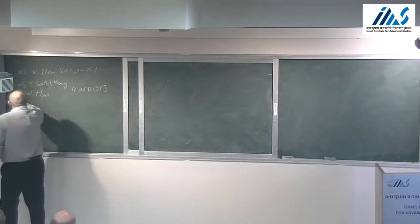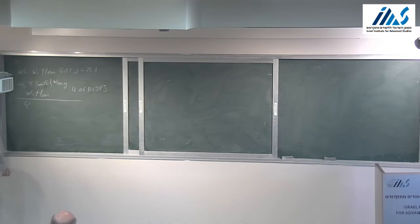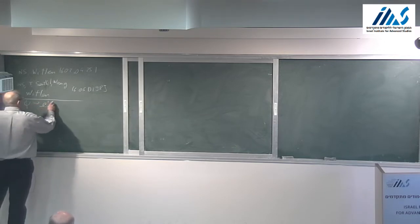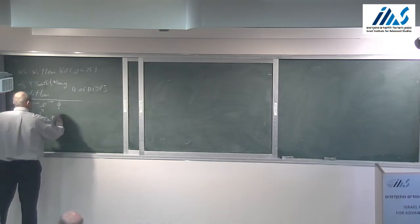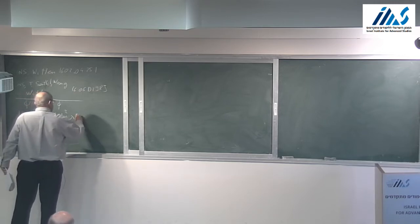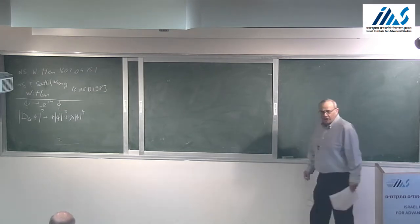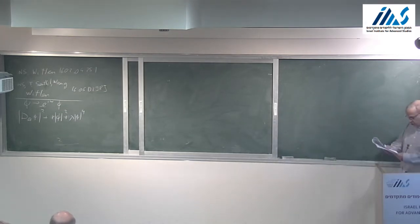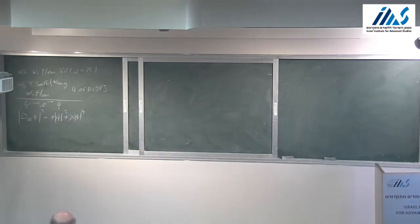I'm going to follow Subir's footsteps and study the XY model. The cast of characters is a complex scalar field phi with a global U1 symmetry: phi goes to e^{i alpha} phi. I'm writing a Lagrangian in Euclidean signature, and we will later contemplate adding phi to the sixth. We start with step one in understanding quantum field theory: semi-classical physics.